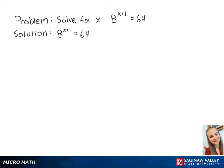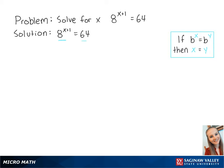For this problem, we want to solve for x in the equation 8 to the x plus 1 equals 64. Using the following property, we want both sides of the equation to share the same base. Since 64 equals 8 squared, we can rewrite this as 8 to the x plus 1 equals 8 squared.